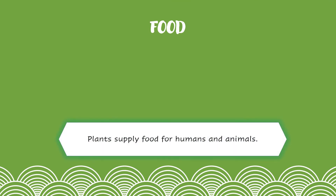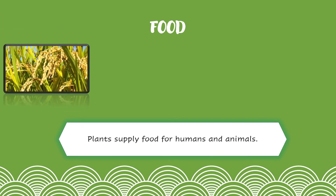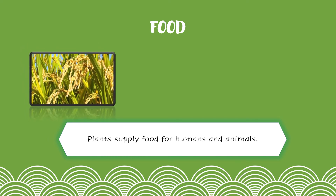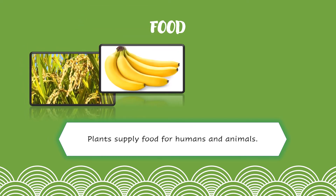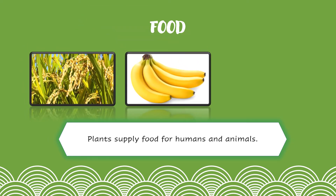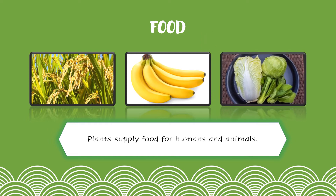The first one is food. Plants supply food for humans and animals. For example, fruits and vegetables.